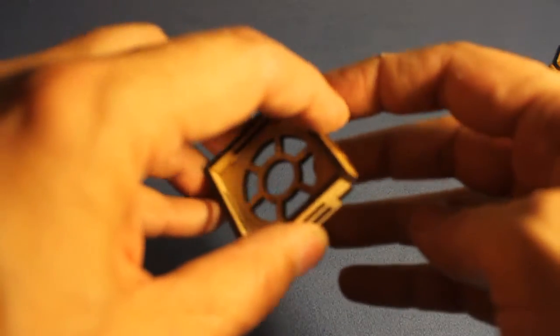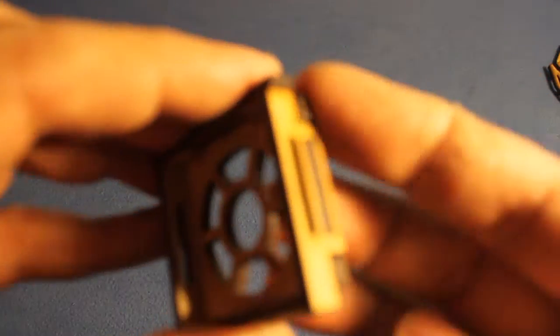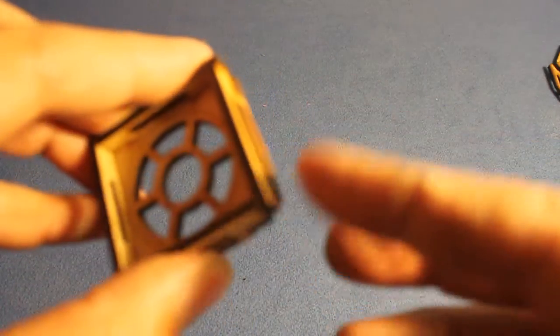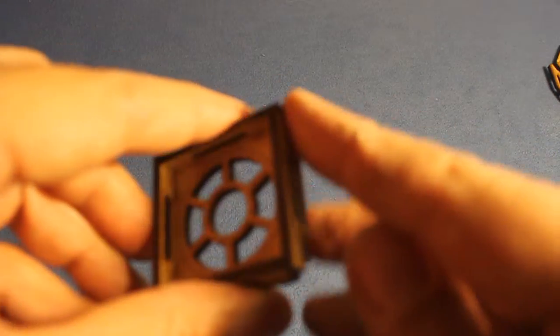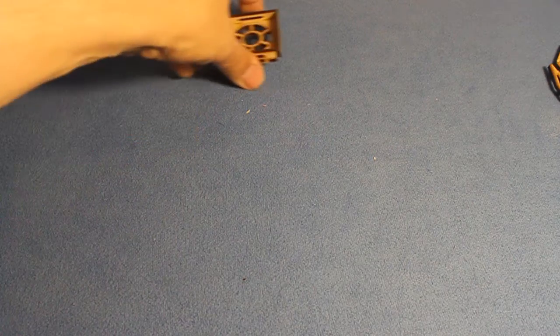Now, the roof, you'll notice there's like little pegs. One side does not have the pegs, that's going to be the side with the door, so we're going to put that to the side, and we're going to build the building itself.